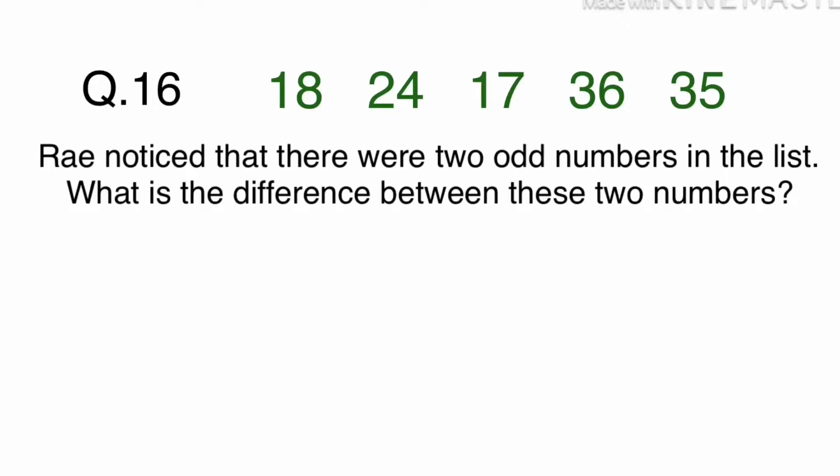Question 16. Ray noticed that there were two odd numbers in the list. What is the difference between these two numbers? A. 8, B. 18, C. 21, or D. 28?